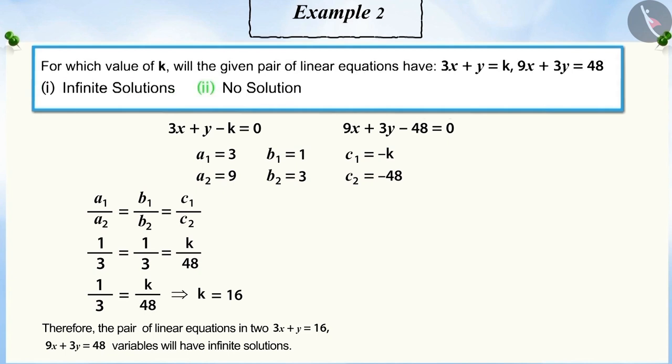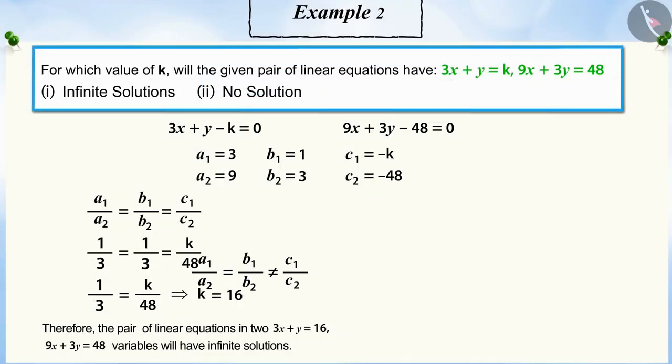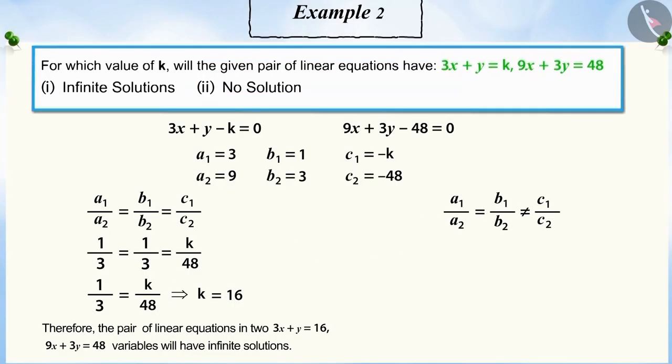Now, in the next part of the question, we need to find out for which value of k will the given pair of linear equations have no solution. Again, with the help of the table, the given pair of linear equations will have no solutions if a₁/a₂ is equal to b₁/b₂ which is not equal to c₁/c₂.